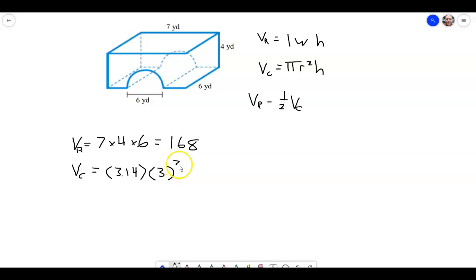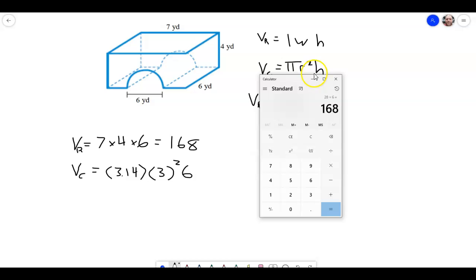And then we're going to square that, and then times the height. That would be the distance, the height of the cylinder. So from one circular base to the other, so that distance there is 6 times 6.